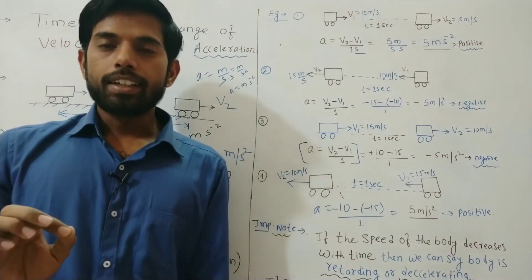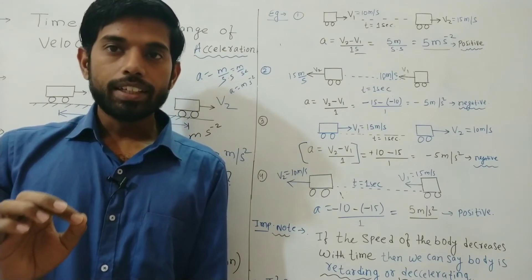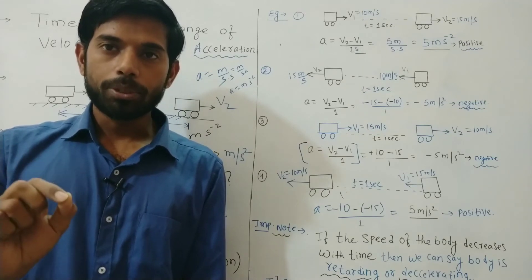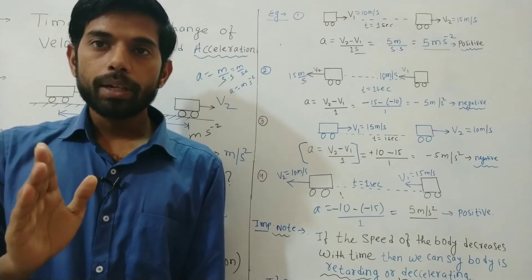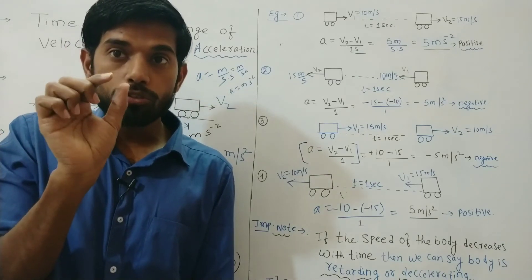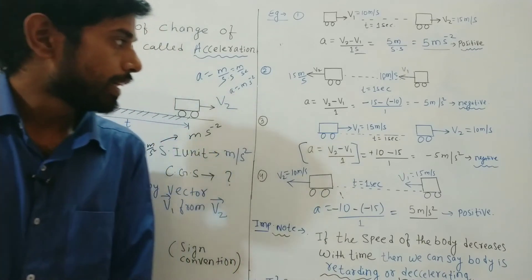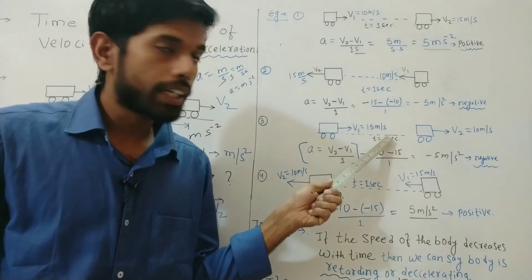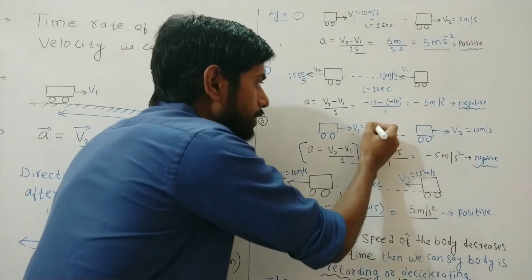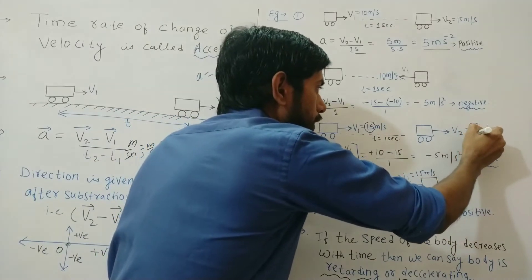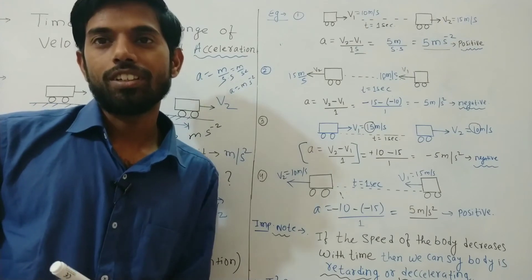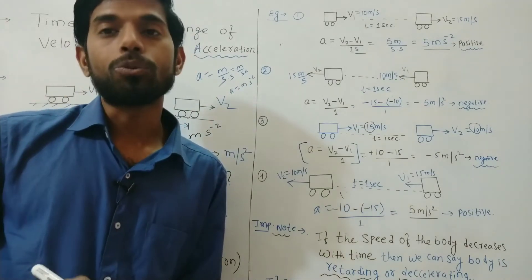Negative acceleration does not mean deceleration. Deceleration or retardation means whenever there is a decrement in speed — whenever there is a decrease in the magnitude value of velocity. Here you can see the object is moving at 15 m/s and its speed changes to 10 m/s, so there is a decrease in magnitude. This is deceleration; this is retardation. Retardation does not simply mean negative acceleration.